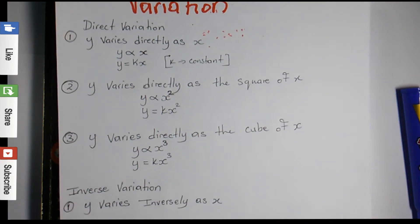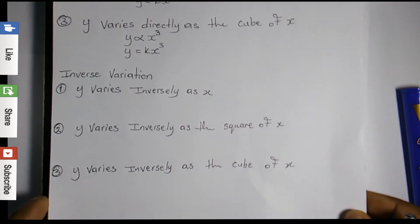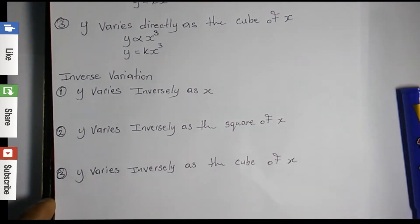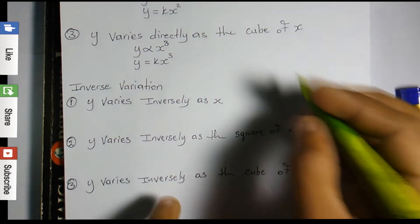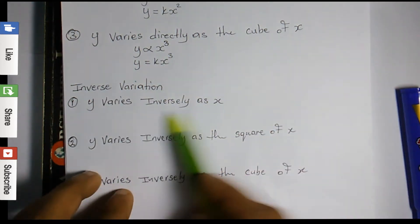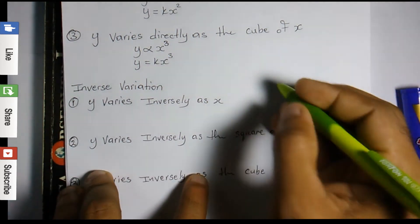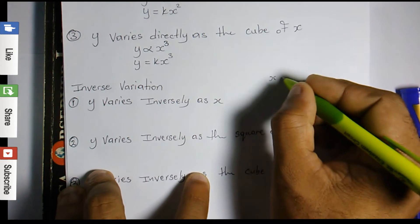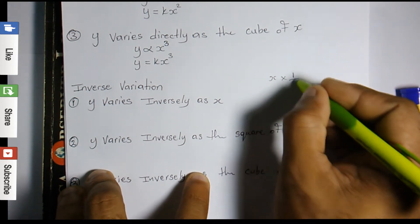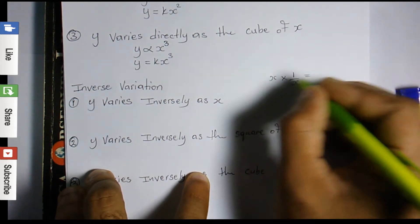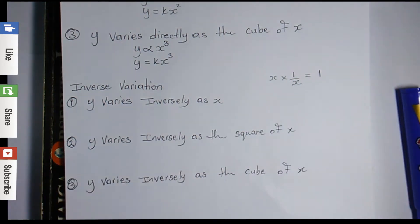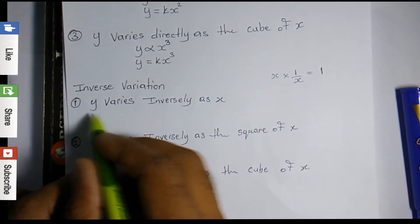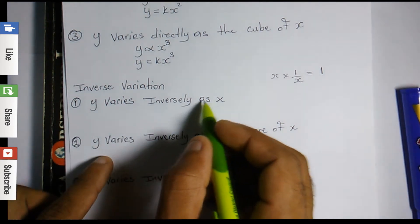Now I'll do the same thing with inverse variation word phrases. Where direct variation has 'directly as x,' inverse variation has 'inversely as x.' The multiplicative inverse of x is 1 over x — meaning when you multiply a number by its multiplicative inverse you get 1.